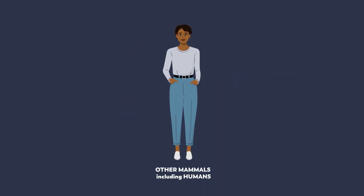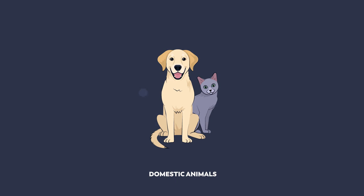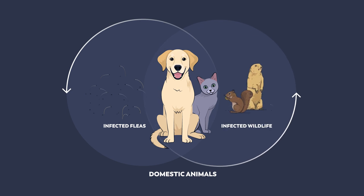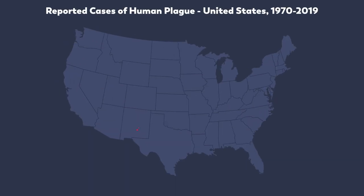Other mammals, including humans, can become infected after being bitten by an infected flea or handling the carcasses of animals that died of plague. Domestic pets can be infected with Y. pestis either from infected fleas or direct contact with infected wildlife. While both dogs and cats can develop plague, cats tend to develop more severe illness. Both cats and dogs can transmit the infection to their owners indirectly through flea bites or directly by coughing in cases where the pet has pneumonic plague. This map shows reported cases of plague in the United States by county of residence; each dot represents a single case randomly placed within the county. Note that the dot in Illinois was in a laboratory worker and does not represent natural exposure.